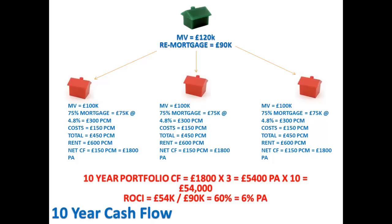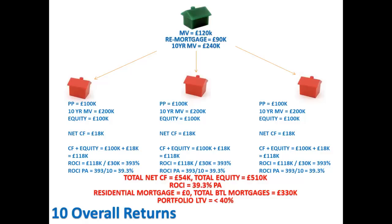So that's the return on a cash flow basis — £5,400 per annum just from single-let properties, nothing complicated. Now what does that mean in terms of the overall return? We leveraged our initial property to 75%, got £90,000 out. It was worth £120,000 and in 10 years time it's worth £240,000. We split that £90,000 into three pots and bought three properties for £100,000 each, putting a 25% deposit of £25,000 down and using the remaining £5,000 for minor works and fees. Each property in 10 years time will be worth double — on average between 7 and 12 years, so as a rough guideline it's worth double what it was.